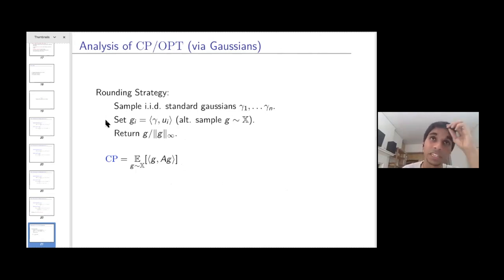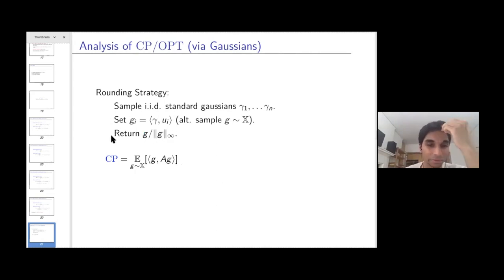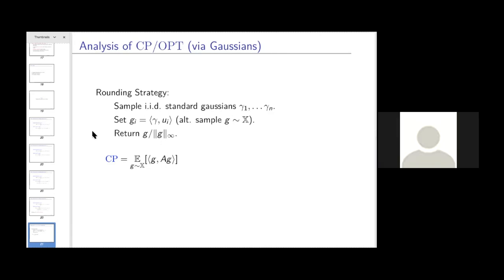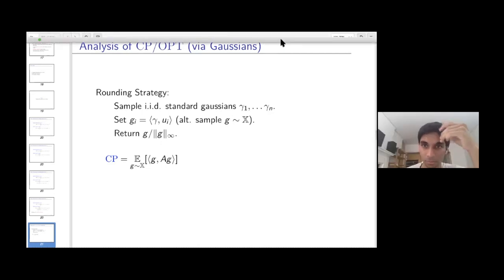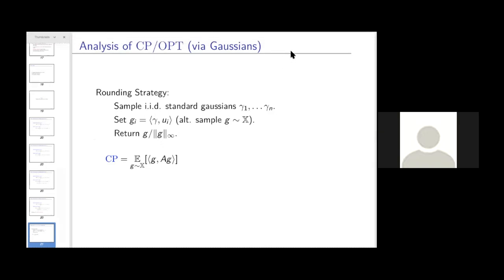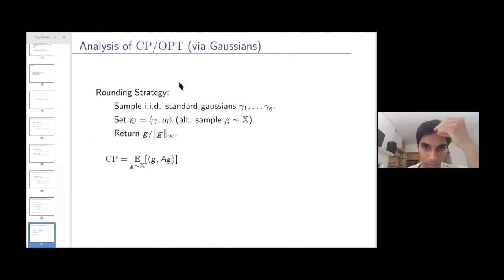The vector g may not lie in the hypercube, so we return g divided by its L-infinity norm. The intuition: sampling g in this way is equivalent to sampling from the multivariate Gaussian with covariance matrix X, since a Gaussian distribution is uniquely determined by its second moments.